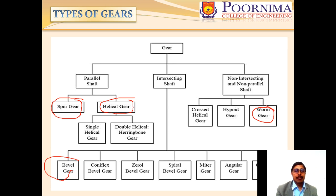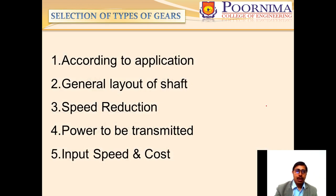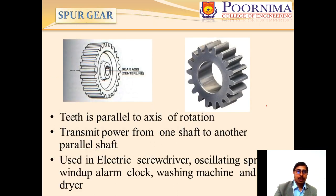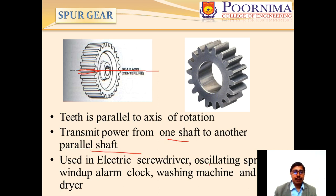The selection of a gear type depends on the application, shaft speed, speed reduction required, power to be transmitted, input speed, and cost. The spur gear has teeth parallel to the axis of the shaft and transmits power from one shaft to another parallel shaft. Examples include electric screwdrivers, oscillating sprinklers, wind-up alarm clocks, washing machines, and hair dryers.